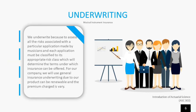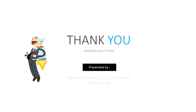Lastly, underwriting — we underwrite to assess all the risks associated with a particular application made by musicians. Each application must be classified to its appropriate risk class, which will determine the terms under which insurance can be offered. We will use general insurance underwriting because our product can be renewable and the premium charged is varied. I hope you enjoyed my presentation. Thank you.